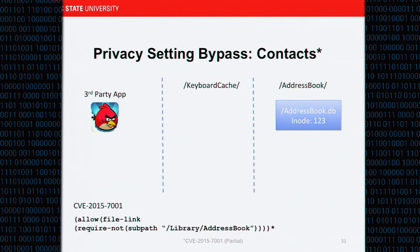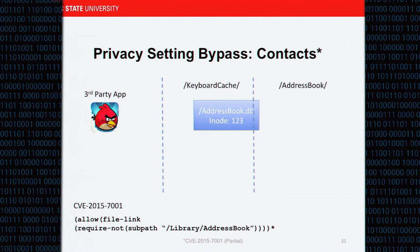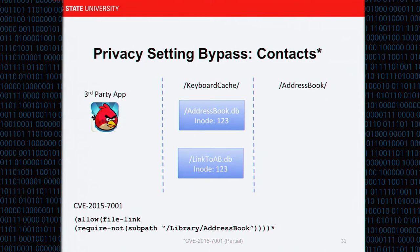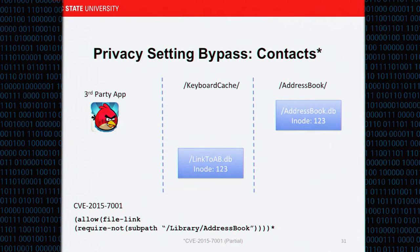I want to point out CVE-2015-7001. We pointed out this attack to Apple and they responded — we reverse-engineered the response through Sandblaster to see exactly what changed. The new rule says: allow a hard link as long as it's not to something in the address book directory. This stopped us briefly, but then we realized that moving a file doesn't change the inode. So we move the whole file to the keyboard cache — the new rule no longer applies, it's not in the address book directory anymore. We make our link, put it back, and we have exactly the same situation.